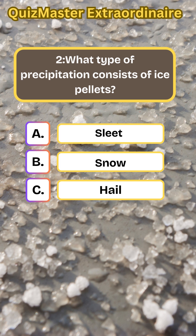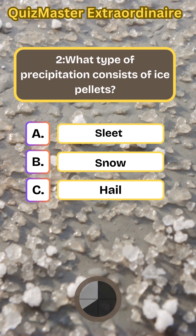What type of precipitation consists of ice pellets? Sleet.